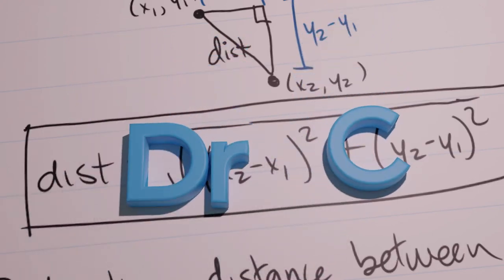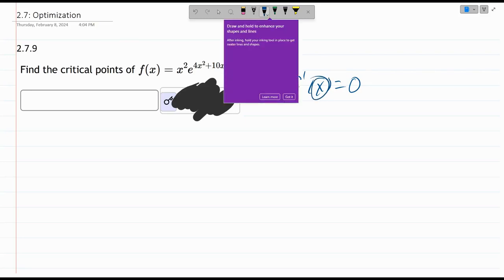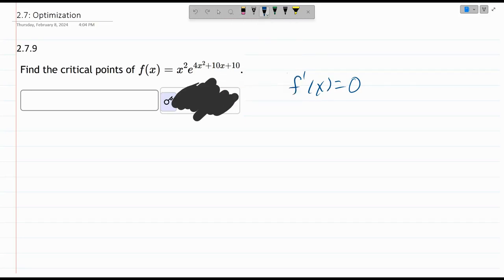This problem, we're going to find the critical points of this function. Remember the critical points are take the derivative and set it equal to zero. And you're setting the derivative equal to zero, not the x-coordinate. It's possible you have an x-coordinate of zero, but you're setting the derivative or the slope of the function to be zero.